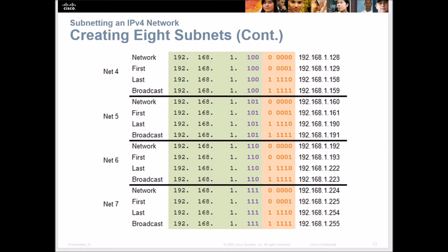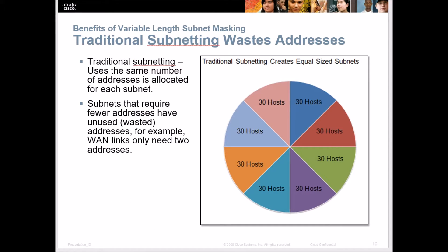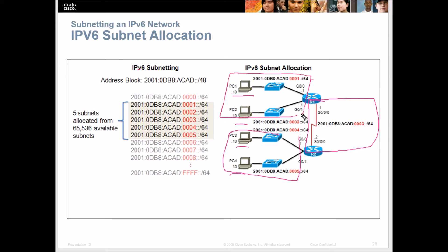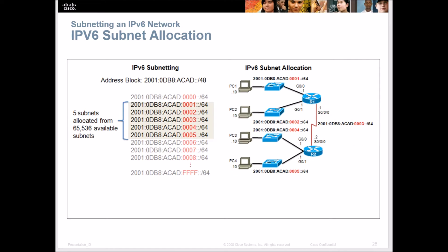What happens is, let's say we have a network that doesn't need 20 addresses in each subnet — maybe a network that only needs two. So why would I assign 20 IP addresses into a subnet when I only need two of them? We fix that by going into the variable length subnet mask process.